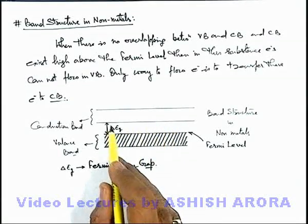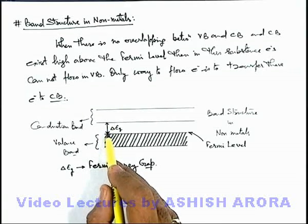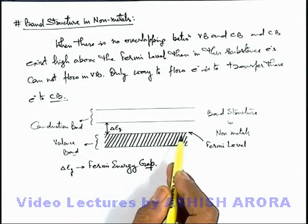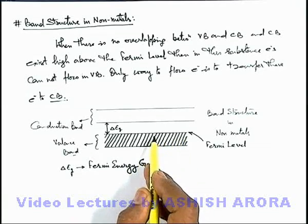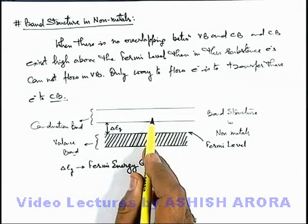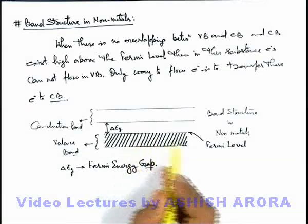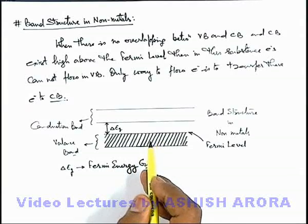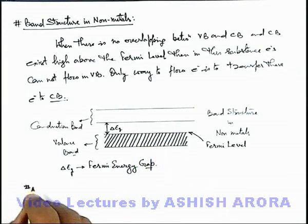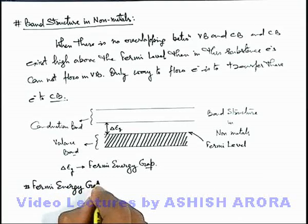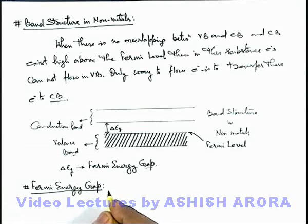In the case of non-metals, the Fermi energy gap is quite high, such that at room temperature, even by thermal agitation, electrons at the Fermi energy level won't be able to transfer to the conduction band. That's why non-metals do not conduct electricity. The Fermi energy gap is quite an important term to be used later in the topic of semiconductors.